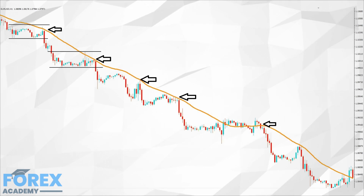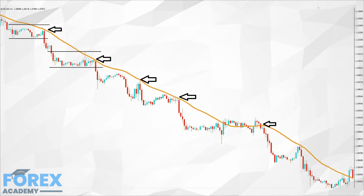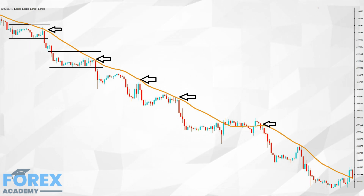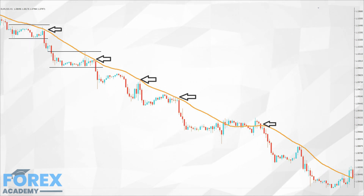In Example E, we have added a simple 30-period moving average. Notice how the price action tends to bounce off this lower line, whilst price action continues in its trend lower.